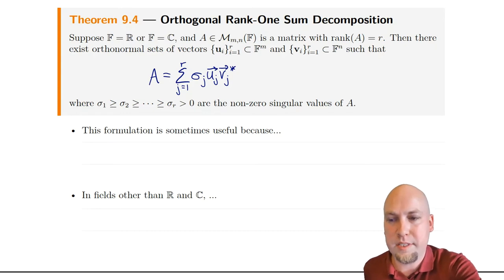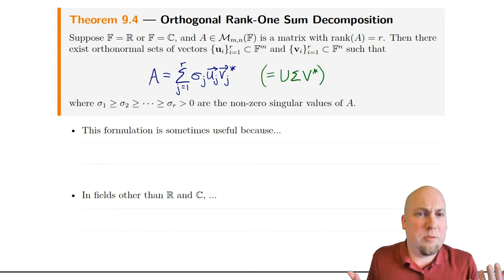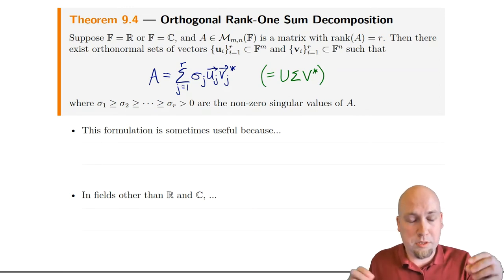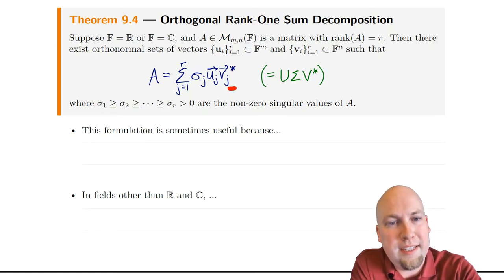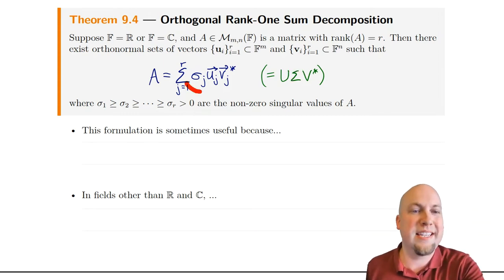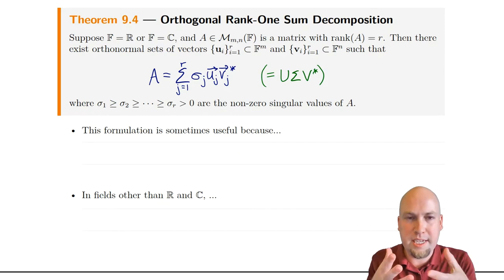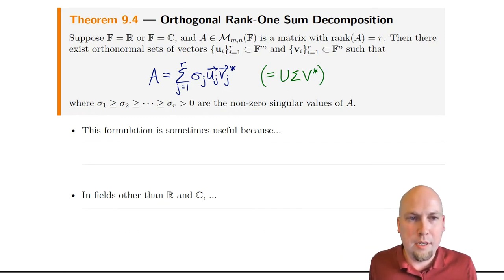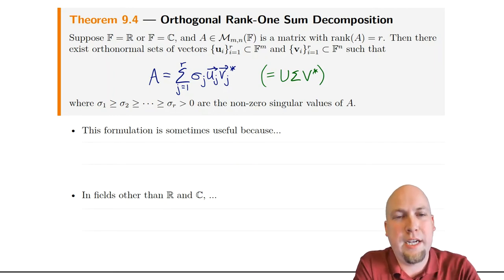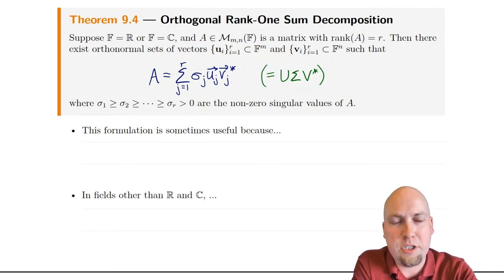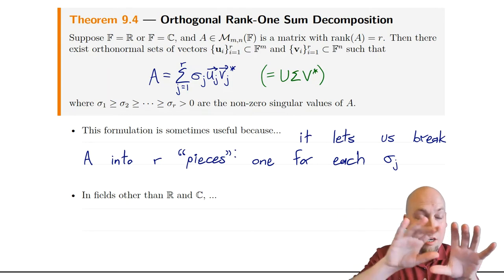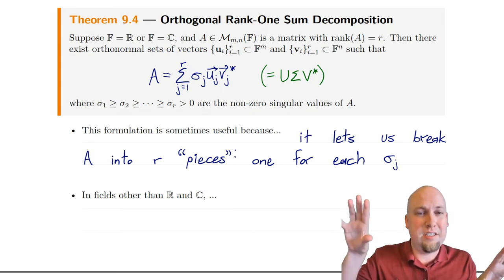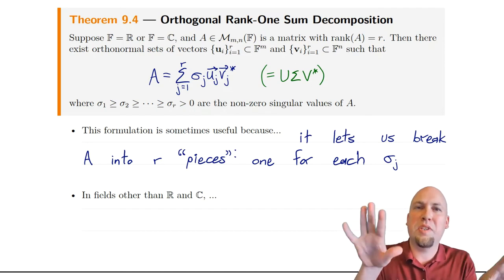You should think of these u's as the columns of U, and these v's as the columns of V, and these little sigmas as the diagonal entries in our big matrix sigma — they're the singular values of the matrix A. The reason why it's sometimes useful to think of the singular value decomposition in this way rather than in the matrix product sense is it lets us think of breaking our matrix down into R pieces if it's a rank-R matrix, and each of those pieces tells us something about the matrix.